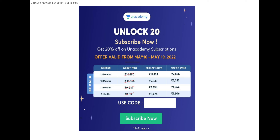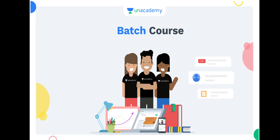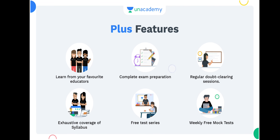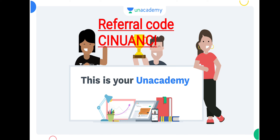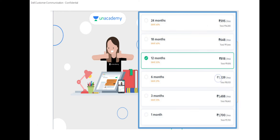Unlock 20 — get 20% off on your subscription. The offer is valid from May 16 to May 19. My referral code is SINU ANSI. Use the referral code SINU ANSI to get your 20% offer.